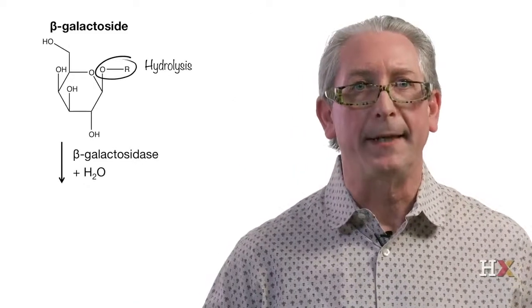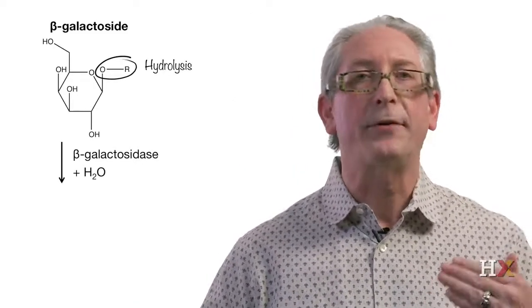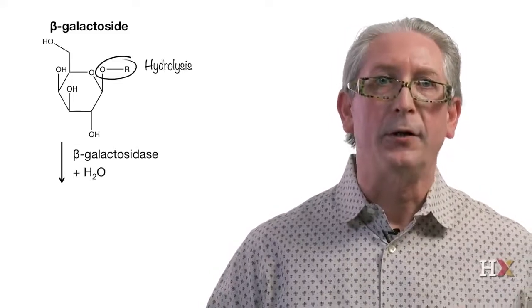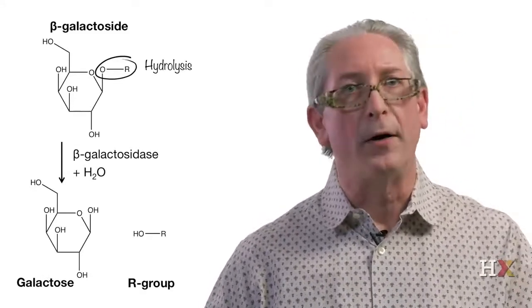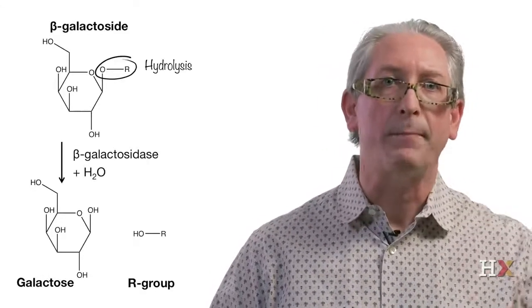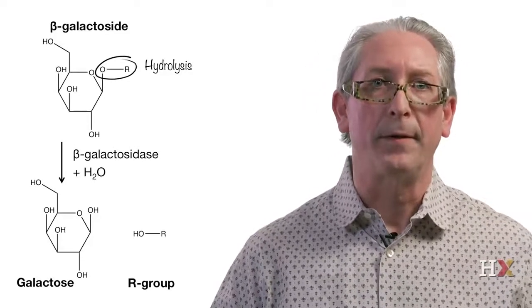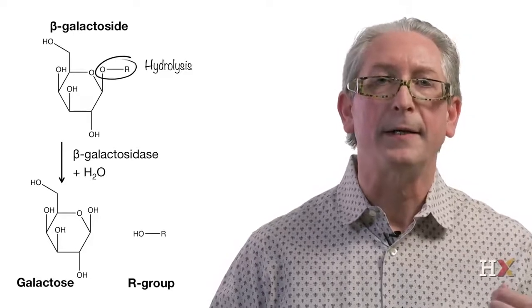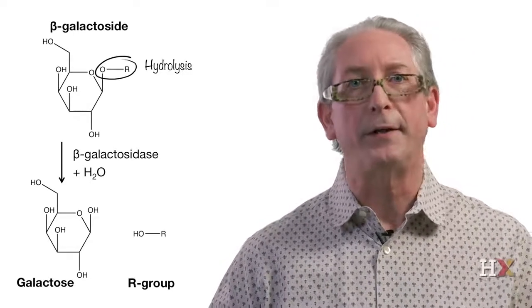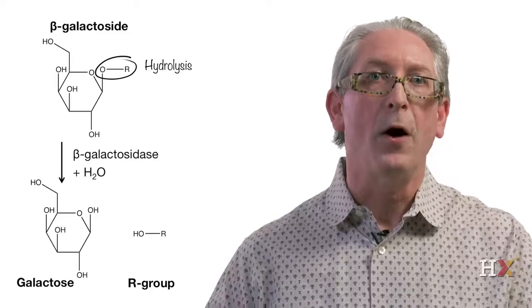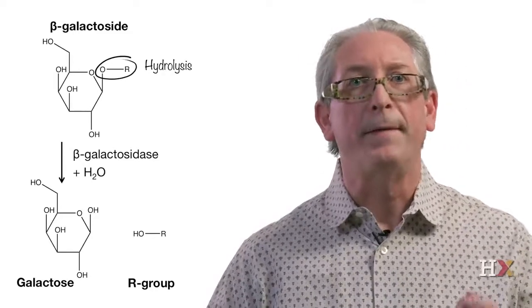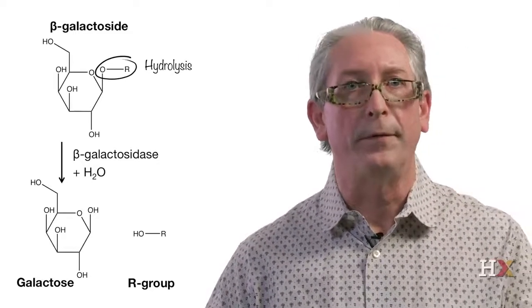How can you measure reaction velocity? If we go back to our example about beta-galactosidase — beta-galactosidase hydrolyzes a beta-galactoside to form galactose and an R group — we have substrate and products. We can use that to define the velocity of a reaction. The velocity of a reaction is either the amount of product formed per unit of time, or the amount of substrate consumed per unit of time.